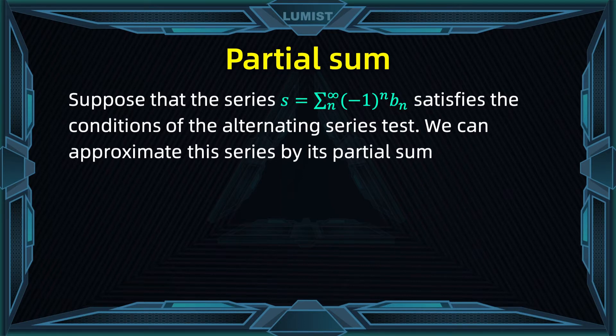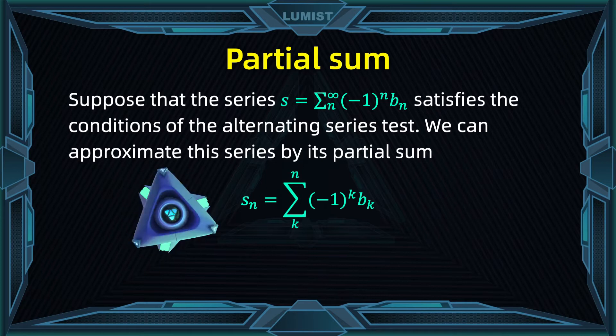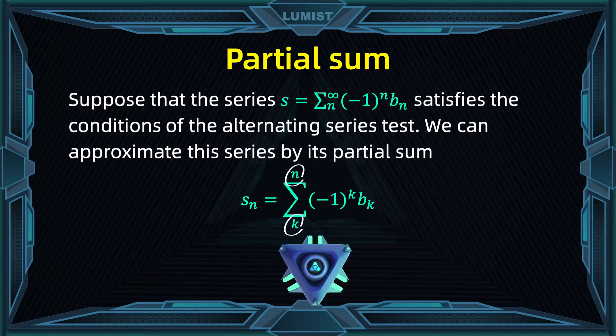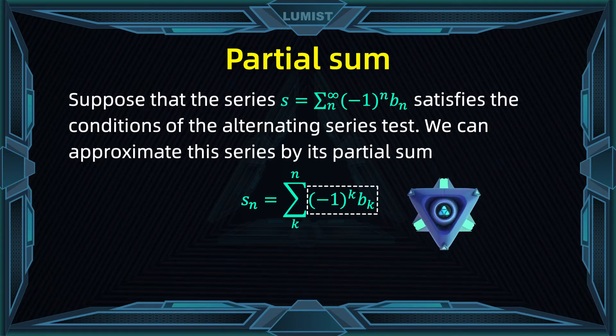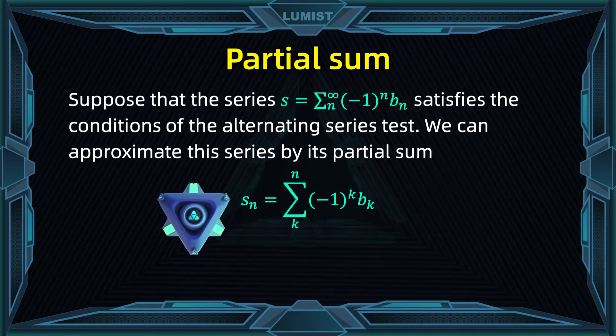Given such alternating series, we can approximate it by its partial sum. Remember that the partial sum is just a truncation of the series. In this case, we go from k to n of minus one to the k times bk. We denote this partial sum by Sn.